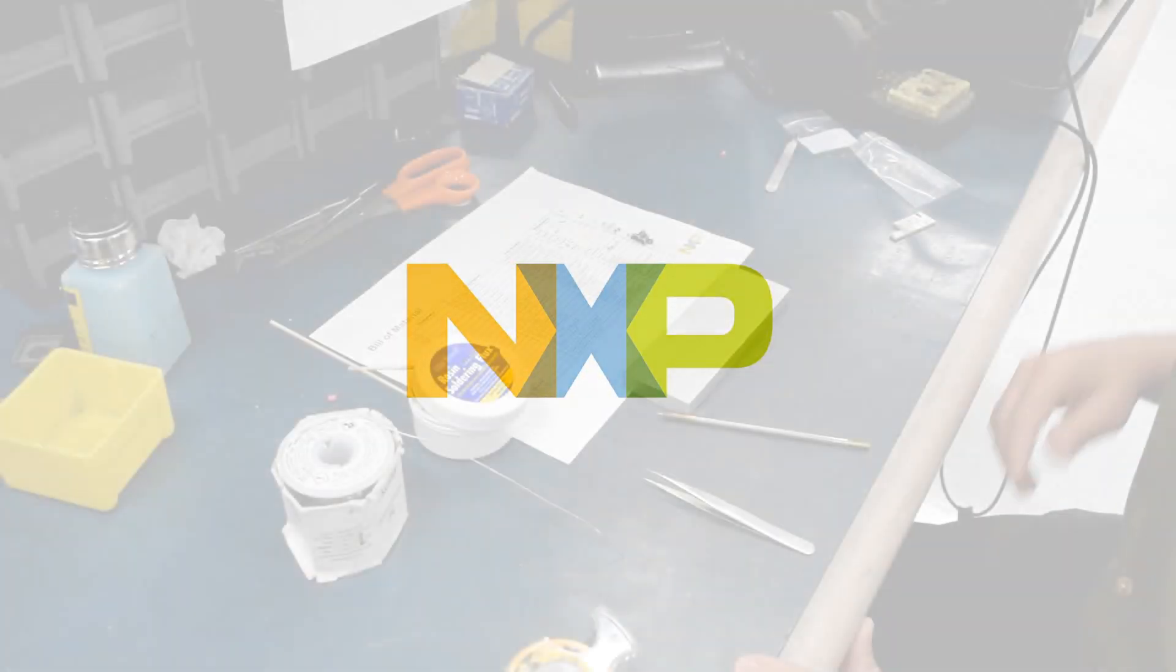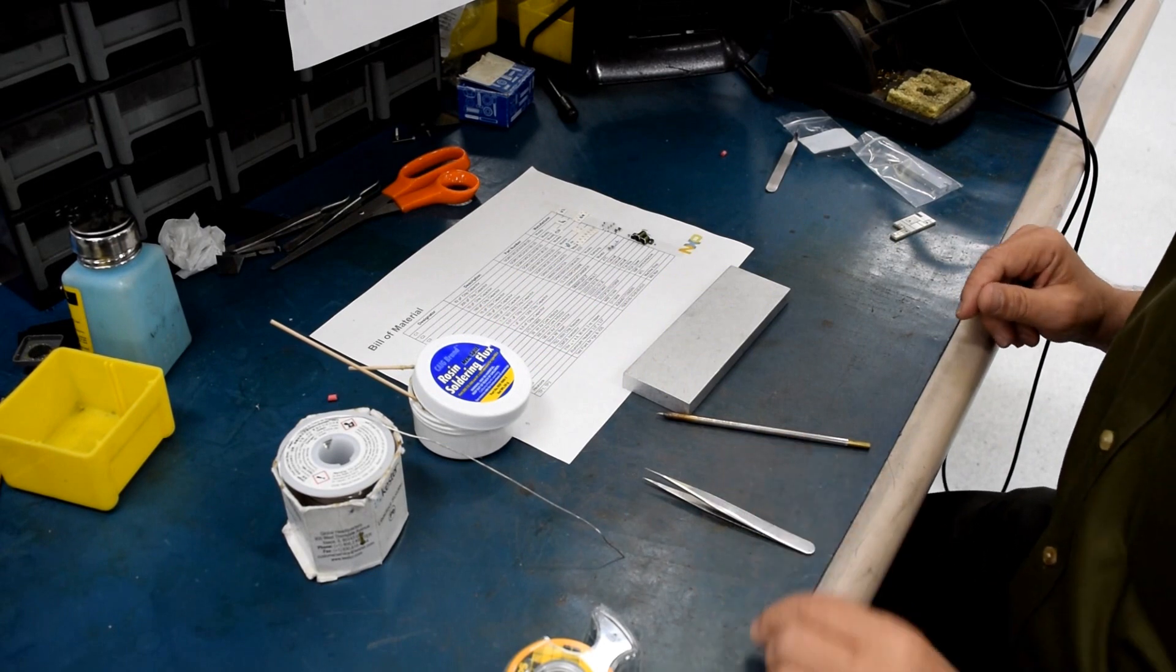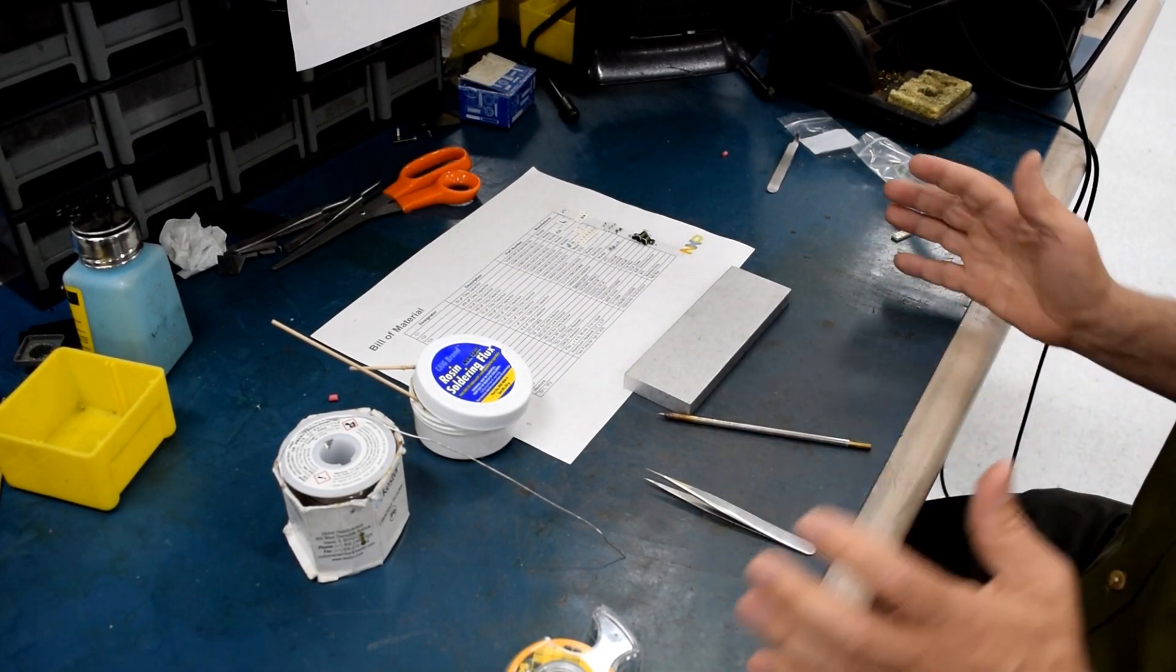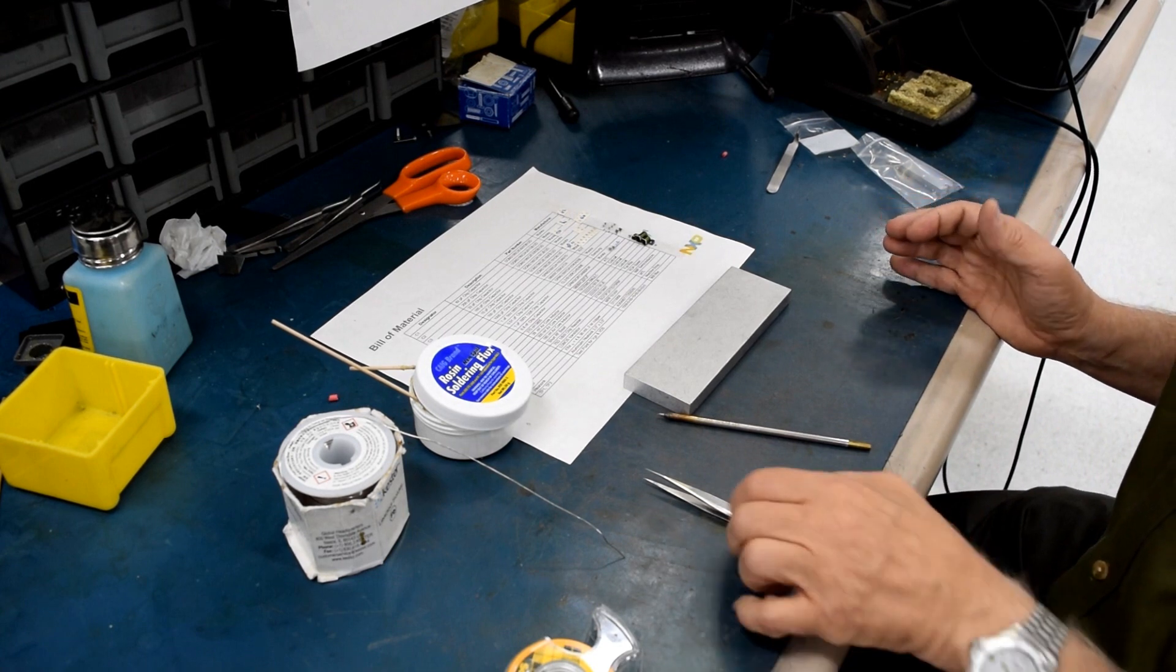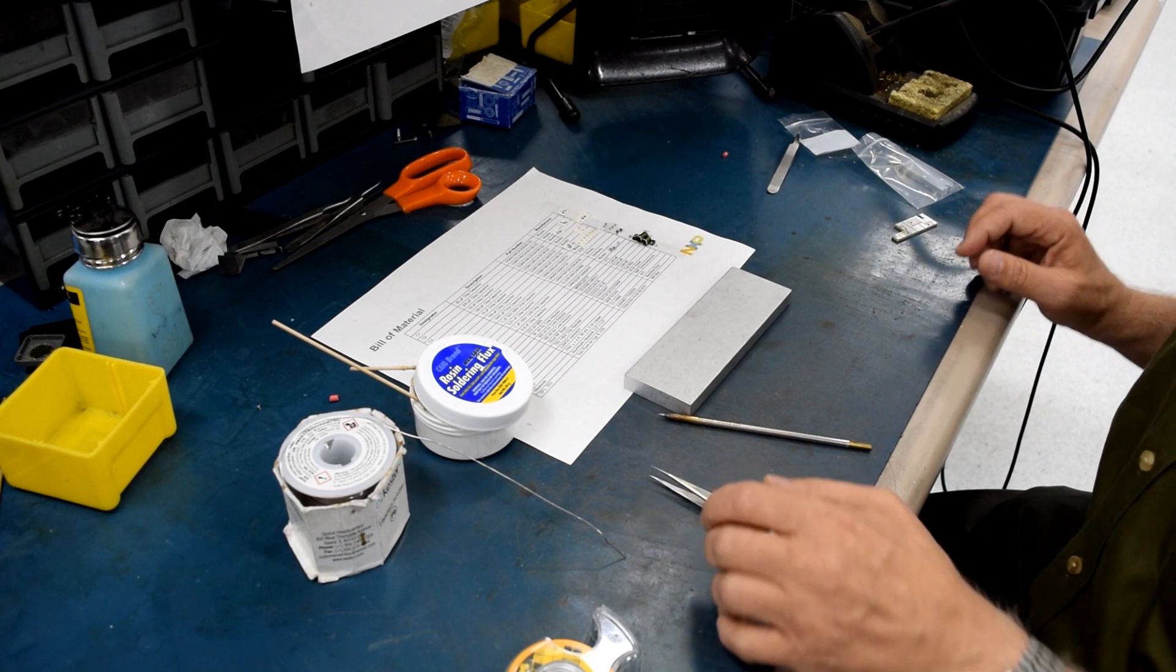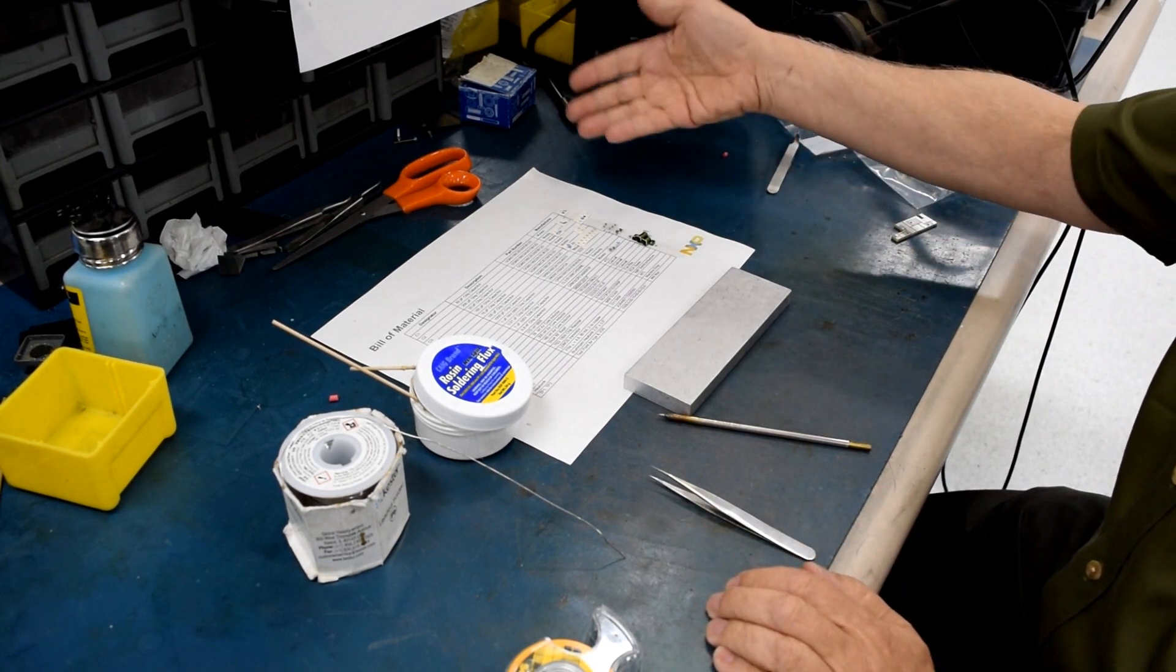This is the MRF 101 kit assembly video. What you've got to do to assemble it successfully is, one, prepare all of your tools and documentation, as well as getting your components ready for the assembly.